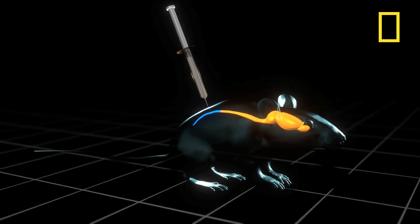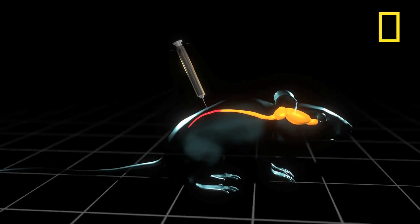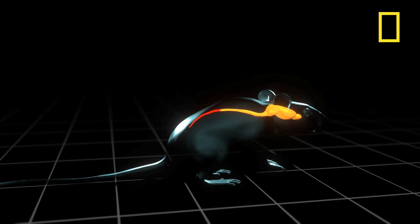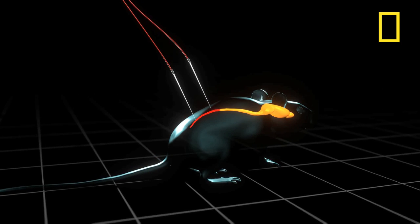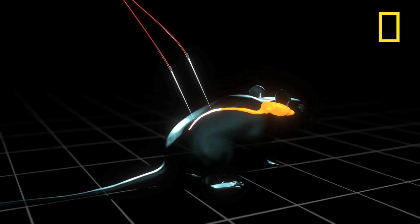The study at EPFL in Switzerland involved injecting neuron activating chemicals into the paralyzed rats as well as applying electrical stimulation.